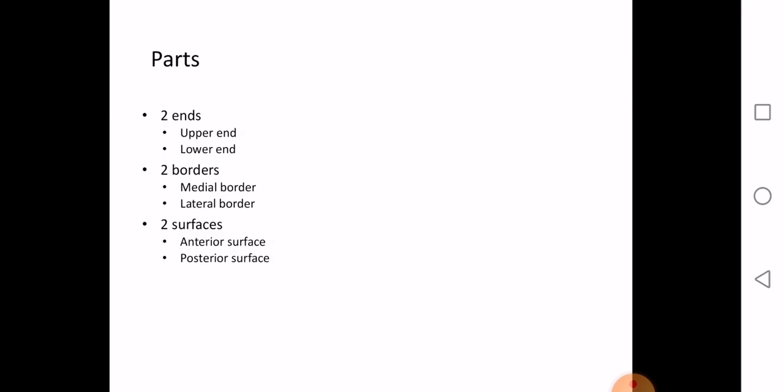Now we come to the parts of the kidney. You need to know the parts of the kidney to identify the side, which is very important for gross practicals. The kidney has two ends — upper and lower — two borders — medial and lateral — and two surfaces: the anterior surface and the posterior surface.